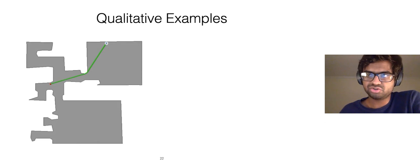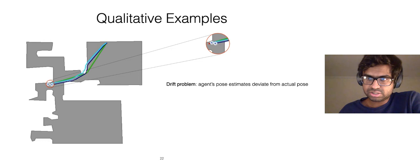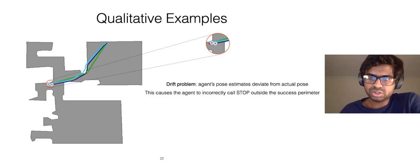We show some sample navigation trajectories of our proposed agent from the val split. The green line shows the shortest path between the agent's spawn location and the target. The line in dark blue corresponds to the actual path taken by the agent, and the light blue line represents the agent's predictions of its location. We see evidence of a drift problem where over the course of time, the agent's integrated pose estimates deviate from its actual pose, thereby causing the agent to incorrectly call stop right outside the success perimeter.